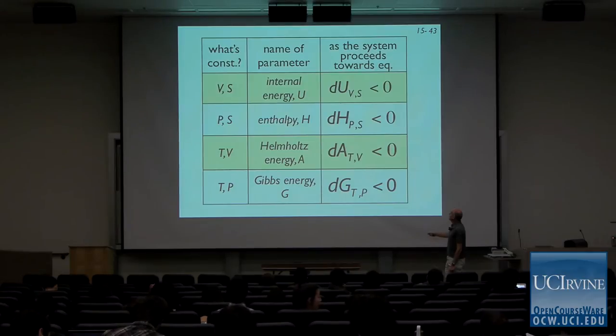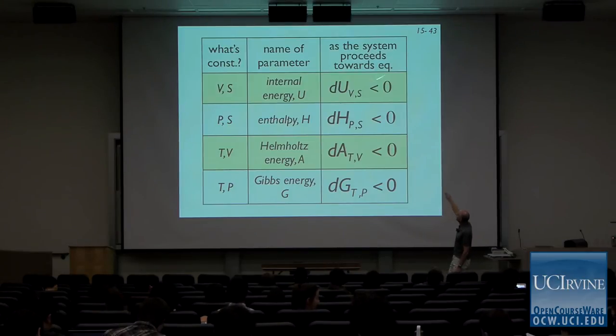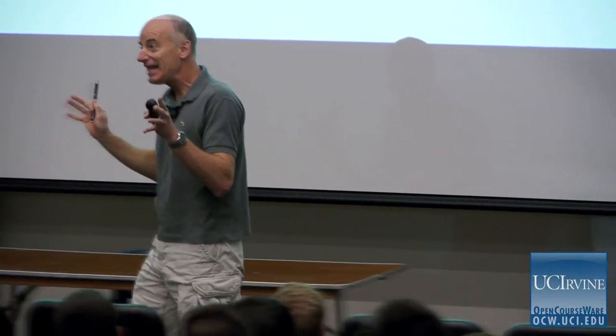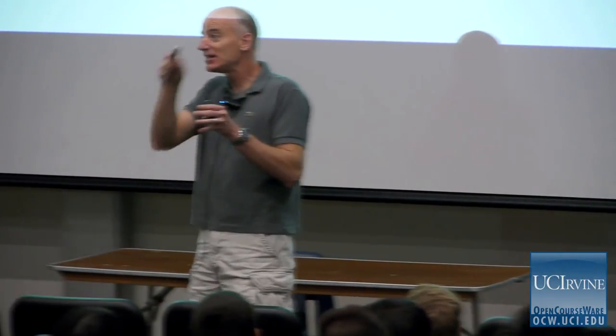These conditions also serve to tell us whether the system is proceeding towards equilibrium — it not only tells us whether the chemistry is spontaneous, but whether the system is proceeding towards equilibrium.